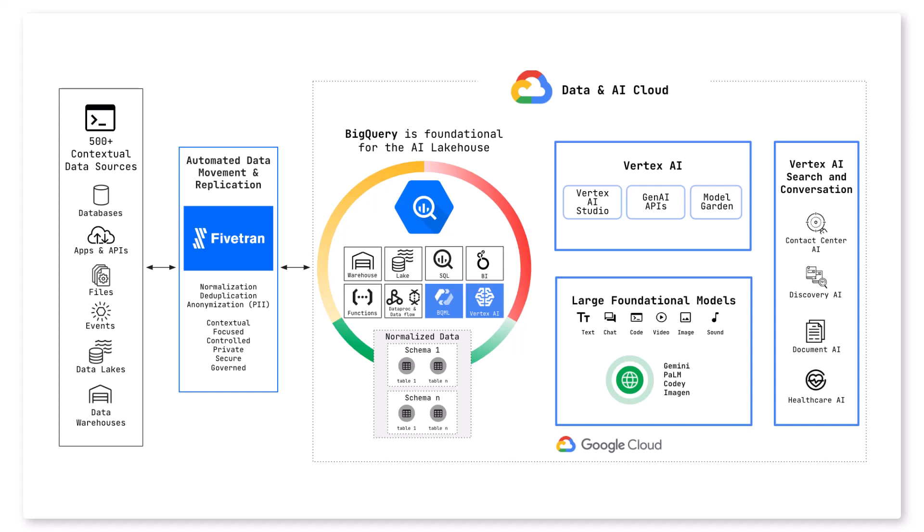Fivetran is a fully automated and fully managed data movement platform that supports delivering high-quality, usable, trusted data for all of the data workloads in BigQuery. Those include data warehousing, data lakes, SQL BI, BQML, and Vertex AI.